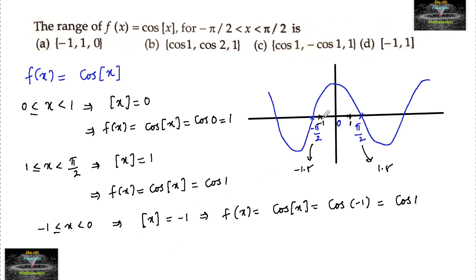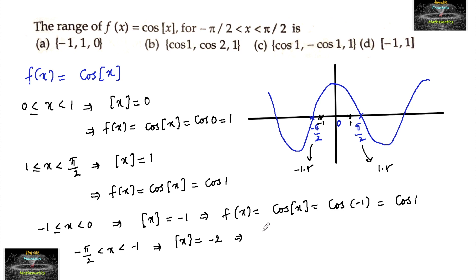For minus π/2 < x < minus 1, the step value ⌊x⌋ = minus 2, since between minus 1 and minus 1.5 the step value is minus 2. So f(x) = cos(⌊x⌋) = cos(minus 2) = cos(2).